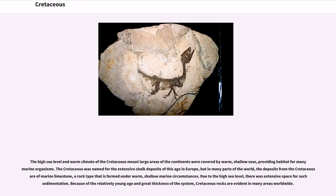The high sea level and warm climate of the Cretaceous meant large areas of the continents were covered by warm, shallow seas, providing habitat for many marine organisms. The Cretaceous was named for the extensive chalk deposits of this age in Europe, but in many parts of the world, the deposits from the Cretaceous are marine limestone, a rock type formed under warm, shallow marine circumstances. Due to the high sea level, there was extensive space for such sedimentation, and Cretaceous rocks are evident in many areas worldwide.